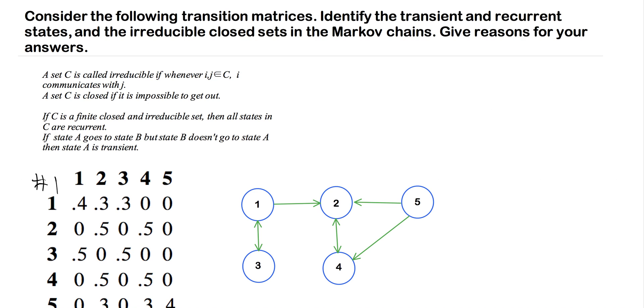If state A goes to state B, but state B doesn't go to state A, then state A is transient. This means if state A can get to state B, if there's a step between that, that's okay. But the big point is that we can get from one state to another, it doesn't matter about the number of steps, but it is impossible, once we get to that state, to get back to where we started. So this is the definition of a state being transient.